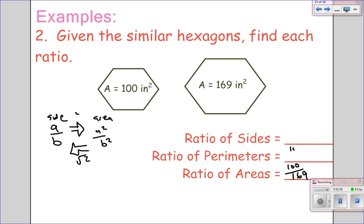So, the square root of 100 is 10, and the square root of 169 is 13. So, 10 over 13. So, to go from side or perimeter ratio to area ratio, you square. To go from area ratio back to side or perimeter ratio, you take the square root of both numbers.